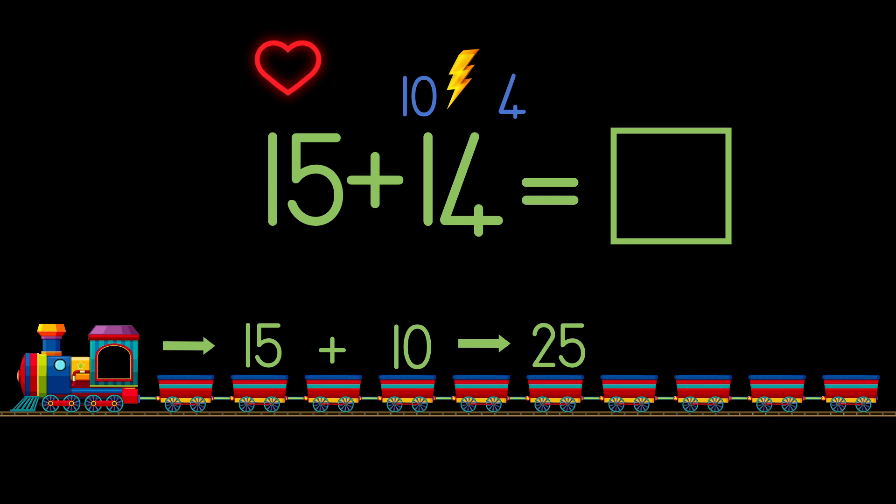But our sum is still not complete. After we have added the 10 we must still add the second piece that the lightning broke off. That's the 4. So we write plus 4, and we now need the answer to 25 plus 4. If you know the answer then you will just write the equals sign followed by the answer.